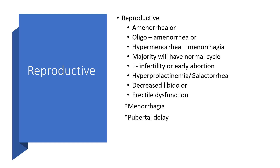Or there may be massive bleeding — menorrhagia. The majority will have a normal cycle, with or without infertility. So when dealing with infertility, thyroid function tests must be done. There is likelihood of early abortion — miscarriage — and that is part of the clinical presentations.